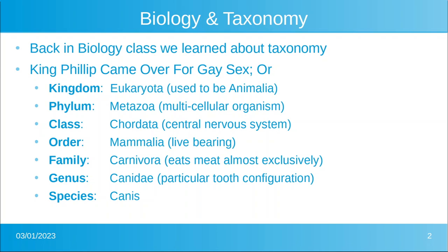Let's look at an individual species. Eukaryota is the kingdom — we know it's an animal, meaning its cells don't have a cell wall. The phylum is Metazoa, including all multicellular organisms. The class is Chordata, meaning it has a central nervous system. The order is Mammalia — they have babies and produce milk. The family is Carnivora, meaning it almost exclusively eats meat. The genus is Canidae, implying a particular tooth configuration.